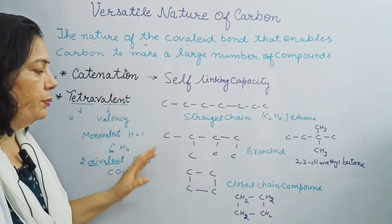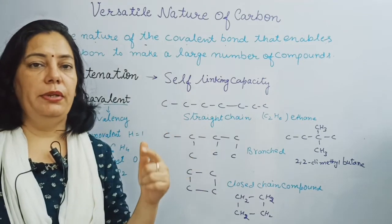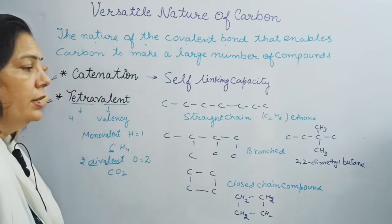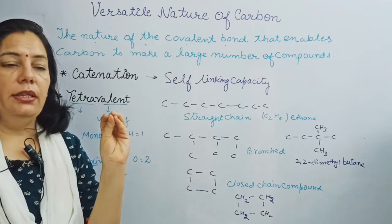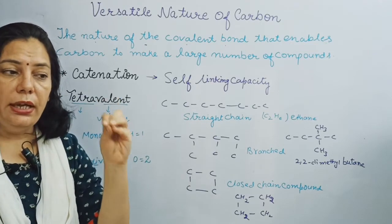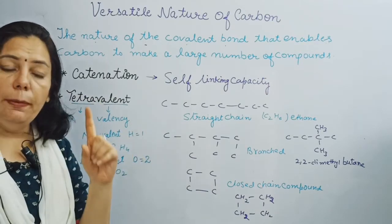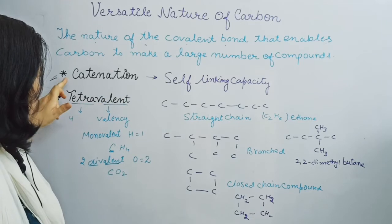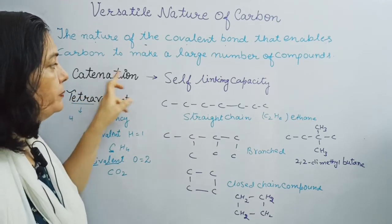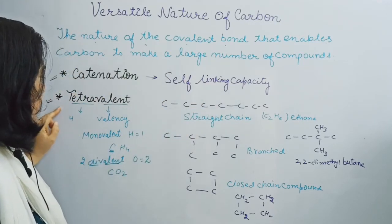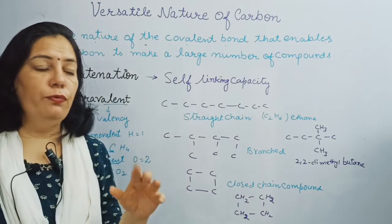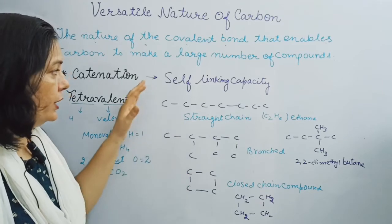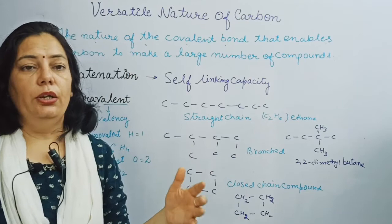If there is a direct question — why are there a large number of carbon compounds in nature — you must write these two terms: catenation (self-linking capacity) and tetravalency. If you want to score 100% marks in your 10th board examination, include these scientific terms in your answers, as they carry weight. These two properties help carbon to make a long chain of compounds.